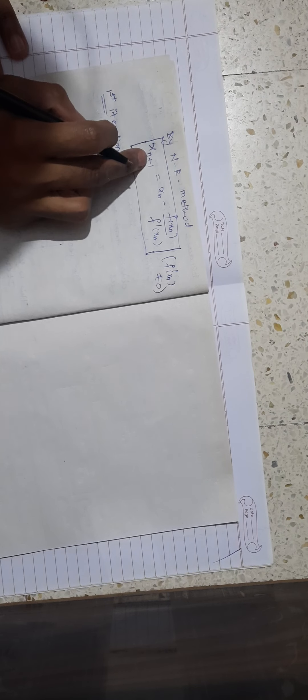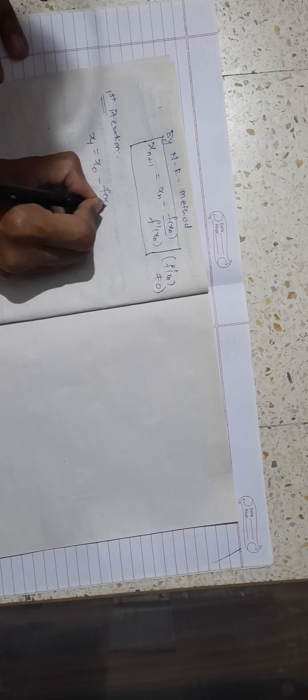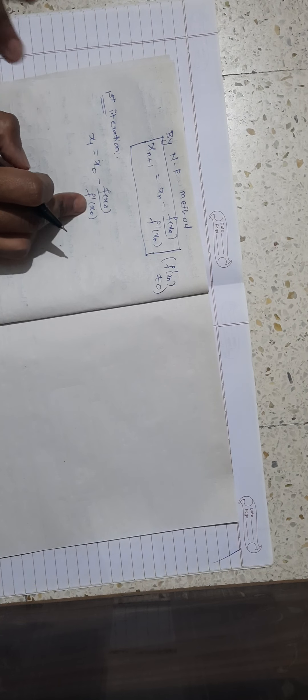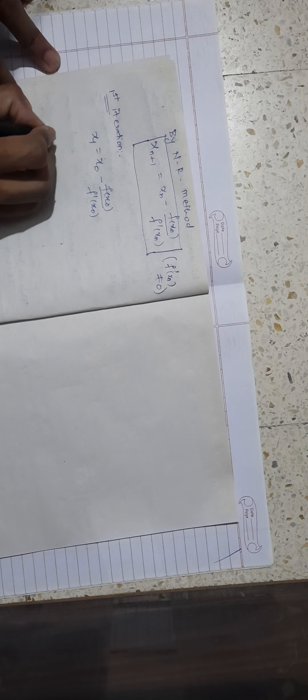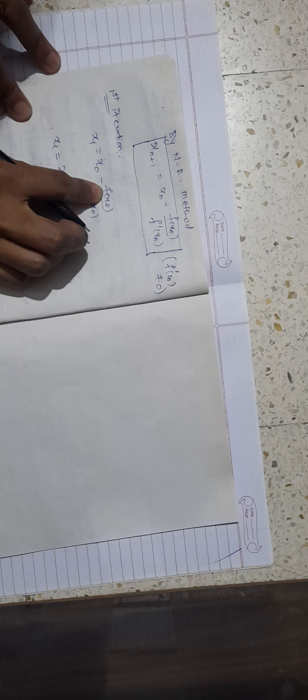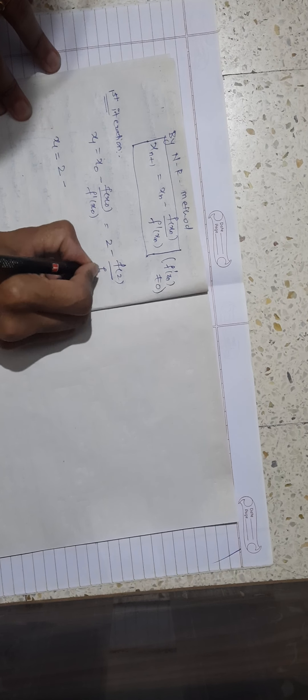The Newton-Raphson iteration formula is: x_{n+1} = x_n - f(x_n) / f'(x_n), provided f'(x_n) ≠ 0. We now begin the first iteration.